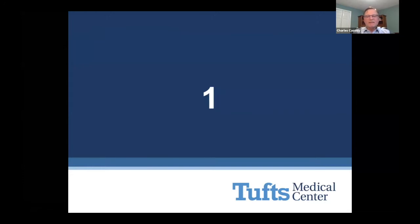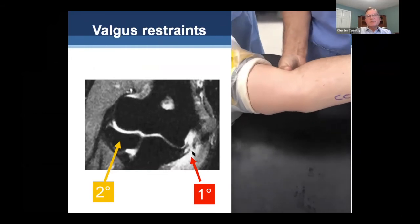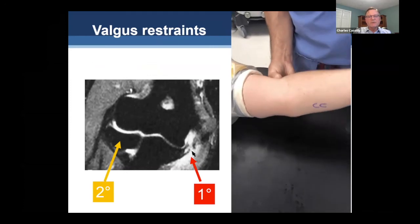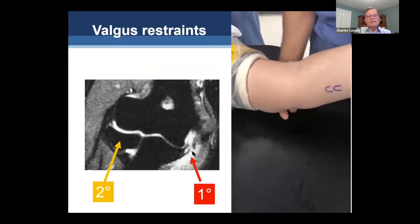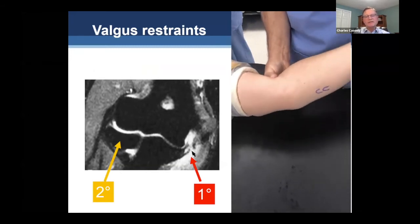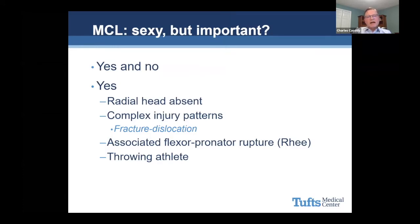I'm going to give you seven take-home points. Number one: the MCL — it's sexy, but is it important? Yes and no. The MCL is the principal restraint to valgus, and you can see that elbow is somewhat unstable under valgus stress. The secondary restraint is the radial head, so if the radial head is intact, the elbow will still be relatively stable. Therefore, the MCL does not always have to be repaired or reconstructed.